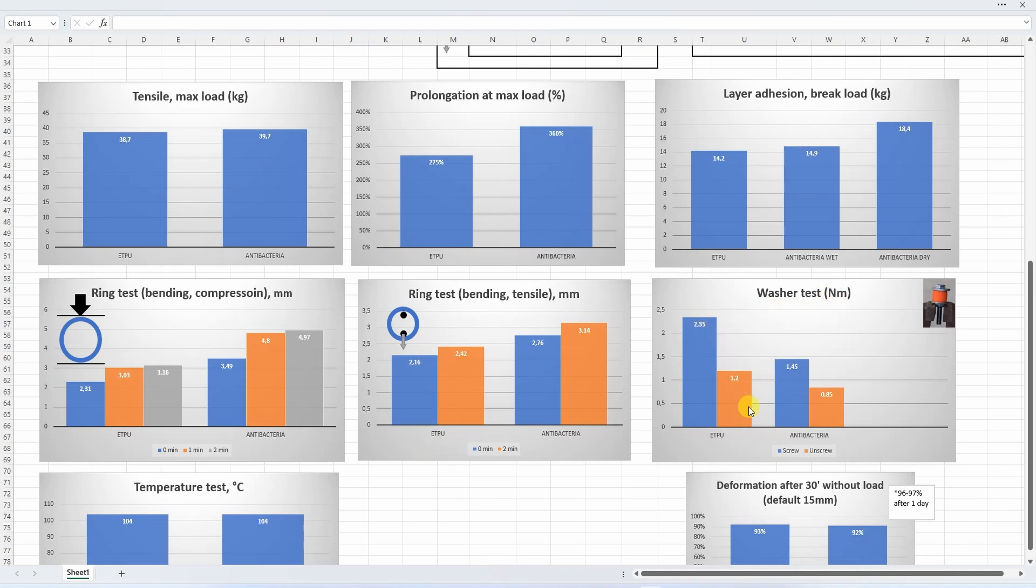Now that washer test. E-TPU was stronger but I wouldn't mind if it would be weaker. What is more important for me is that untightening torque is very close or just a little bit smaller than the tightening torque. This is not so perfect because if you use it as a washer by time it may be weaker and the bolt may unscrew itself.